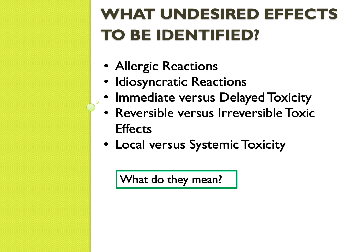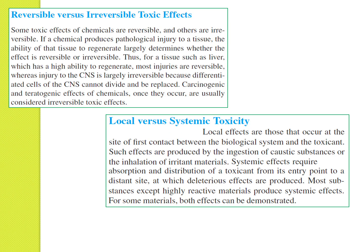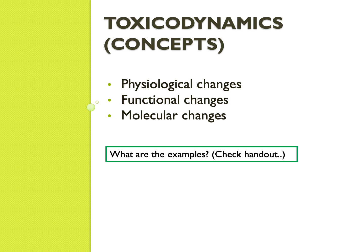Some effects are localized, some are systemic — meaning the whole body experiences the toxicity. You can read through the text on those details as they're straightforward. For toxicodynamics, there are a few concepts to check in the handouts: physiological changes, functional changes, and molecular changes — referring to what's happening within cells. These categories are somewhat overlapping.